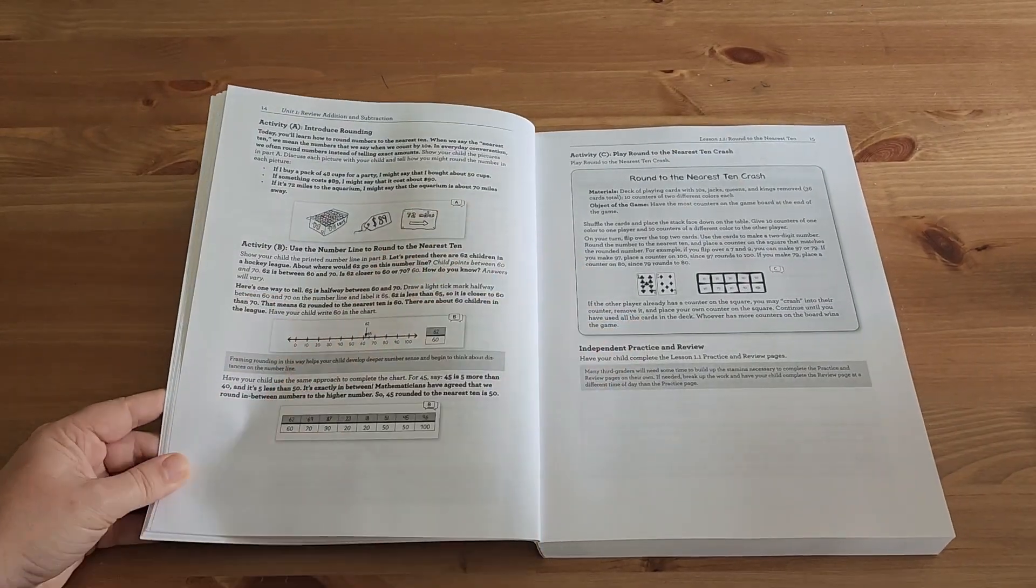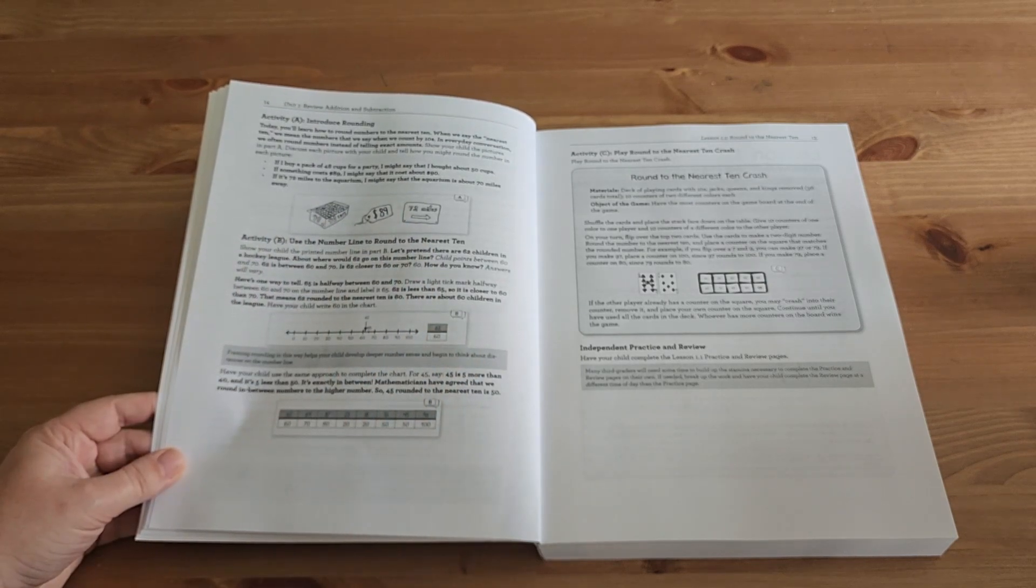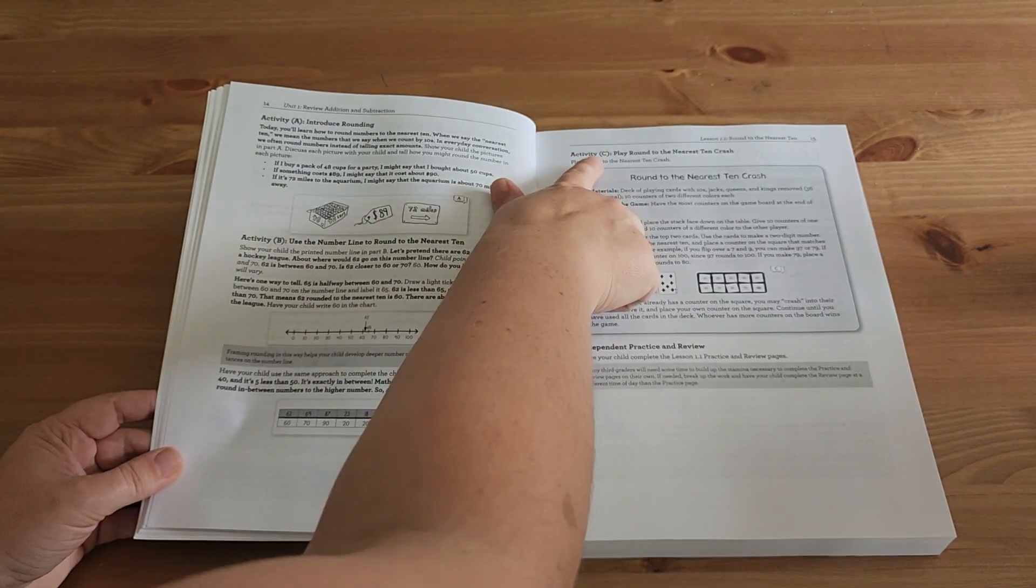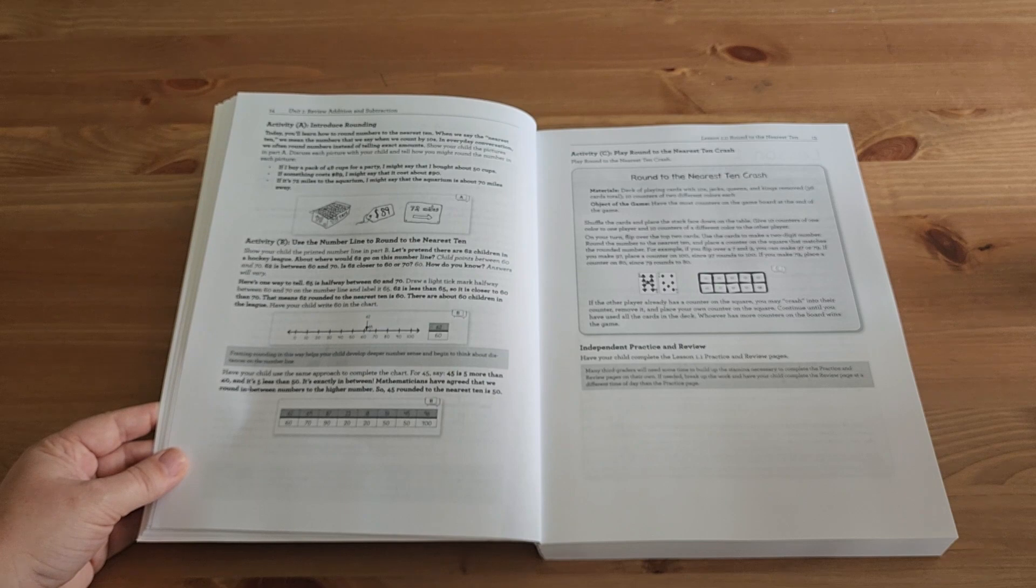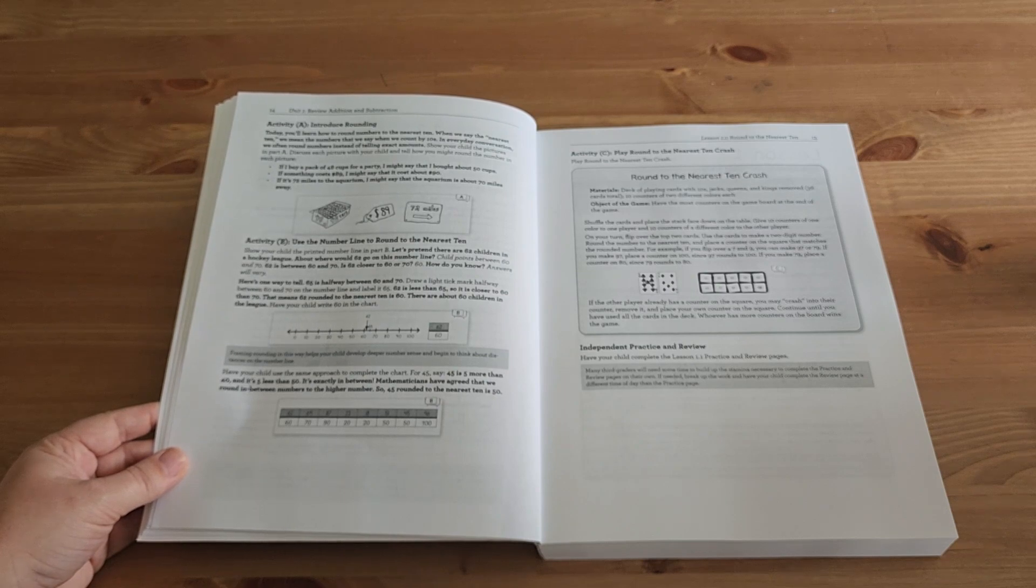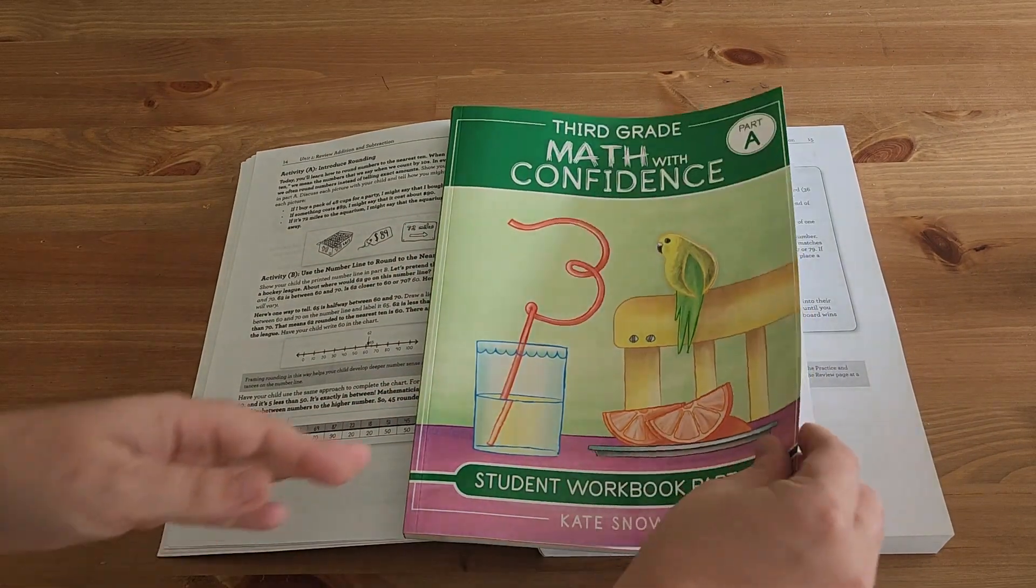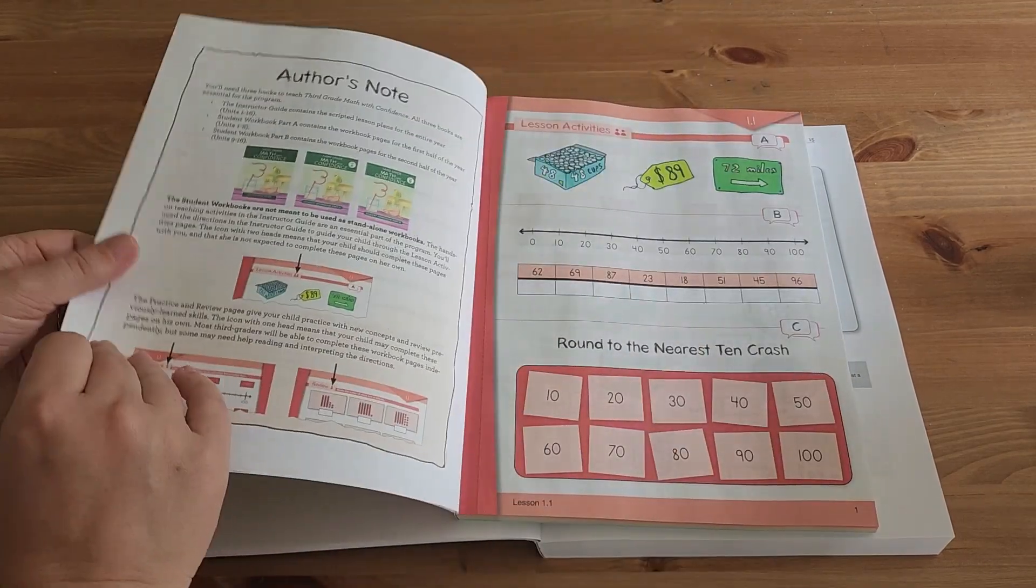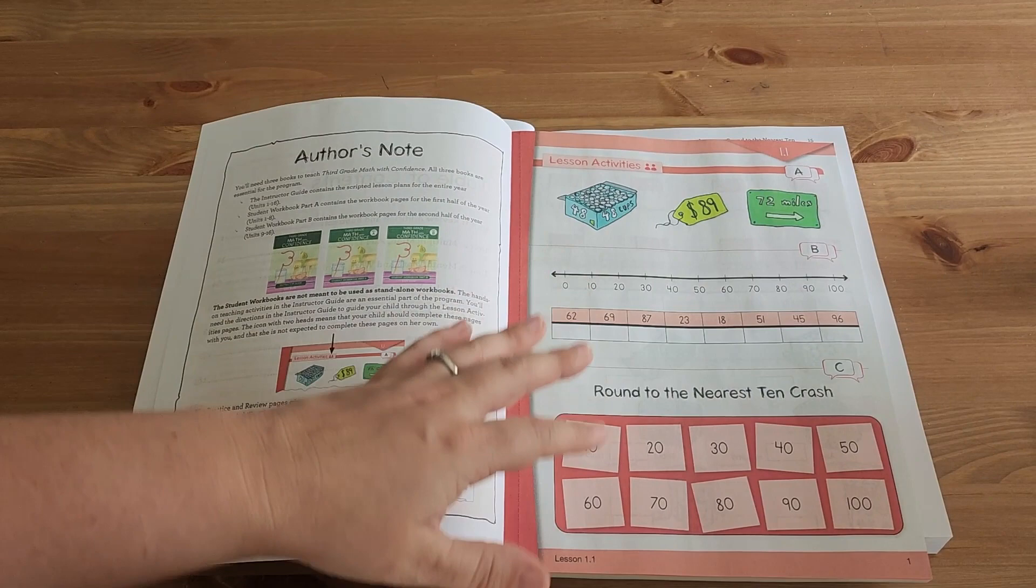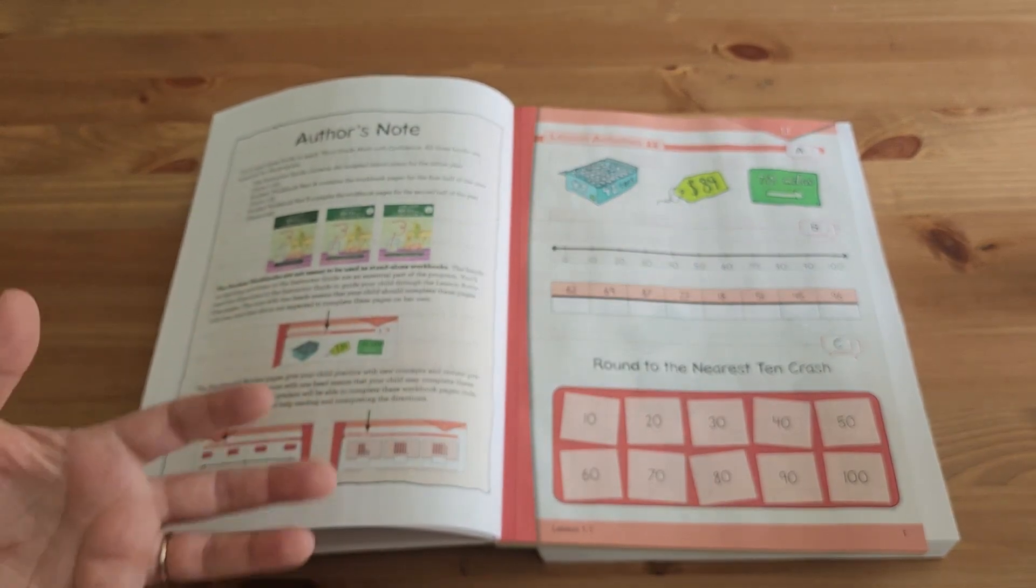So it always starts with this little gray box of what is the purpose and then what the materials are that you need. It also always starts with a warmup. So this is kind of a little bit of review and that is fantastic. Now here is where then there is a change. So we have different activities. Each lesson will have three activities. We have activity A, activity B and activity C. In times past, this is all done kind of hands on with your student and without the use of the student workbook. But in third grade, this is where we are going to bring in the student workbook.